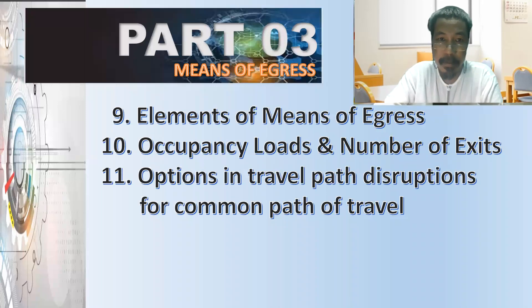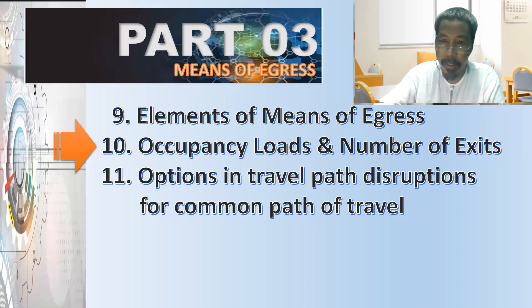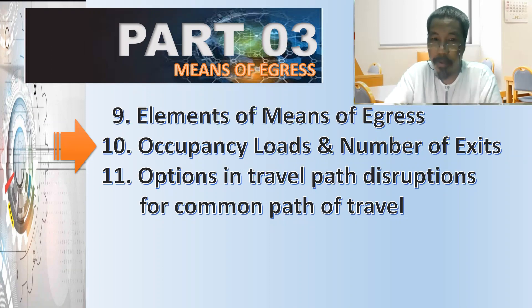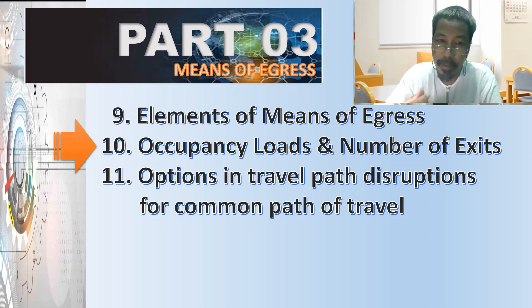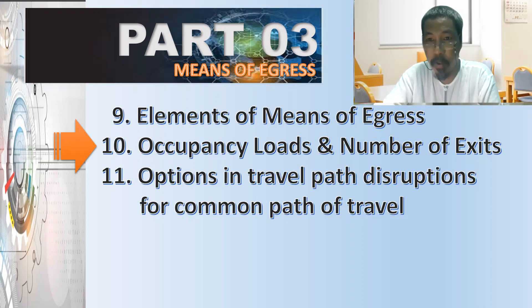We have three subtopics in Part 3. We are now starting discussion on Module 10: occupancy loads and number of exits. We will compute the design occupancy, determine the number of exits required, and determine how many occupant loads are required and if our design would meet the requirement of this code.